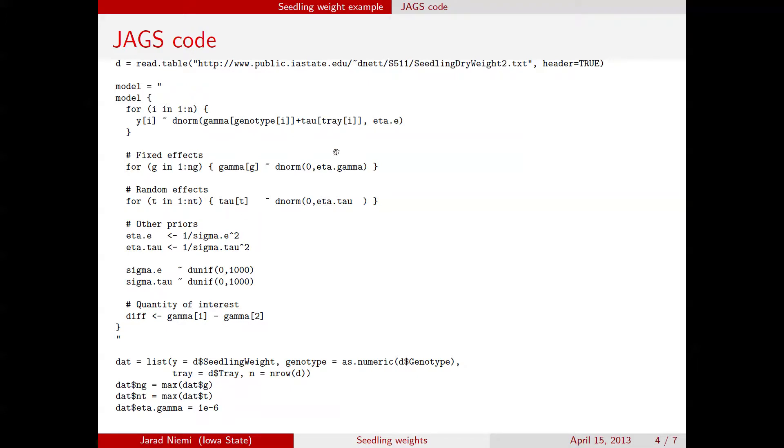Our priors then on eta e and eta tau, we're actually going to assign on the standard deviation scale, so here are uniform zero to a thousand, which is quite large relative to the weights up here, which range, I believe they're certainly under a hundred. Finally, we're going to calculate our quantity of interest. Here is just setting up the data set, and this piece right here says that this eta dot gamma is going to be, this is the precision, is about one over a million, that is not very precise, that is, we're essentially assuming a very diffuse but proper normal distribution.